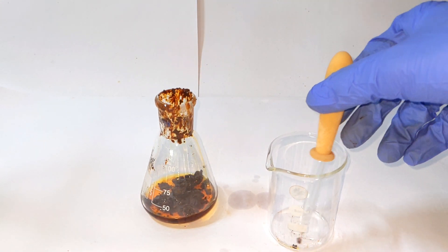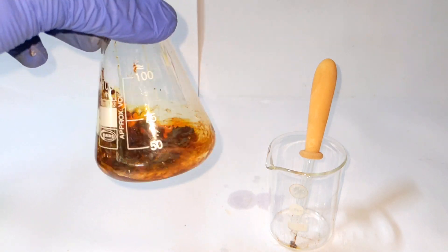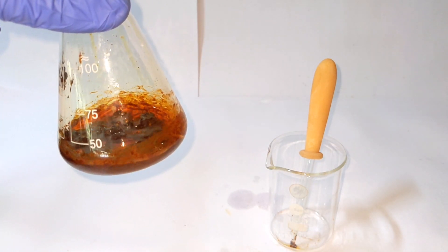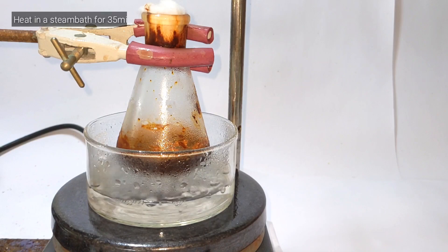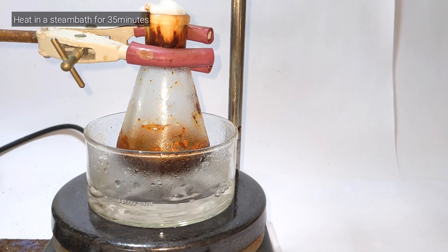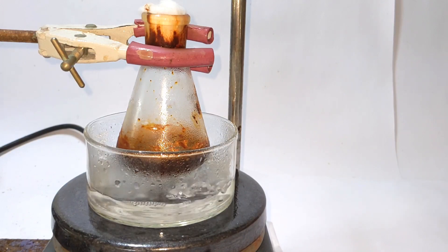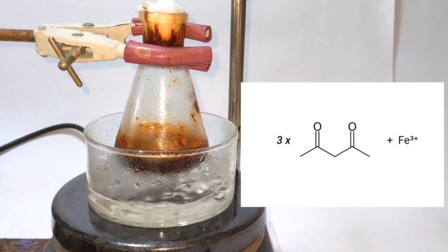It was then mixed together vigorously and then placed on a steam bath for approximately 35 minutes. A cotton plug was placed in the mouth of the Erlenmeyer flask. By the time the reaction takes place, let us see the mechanism.